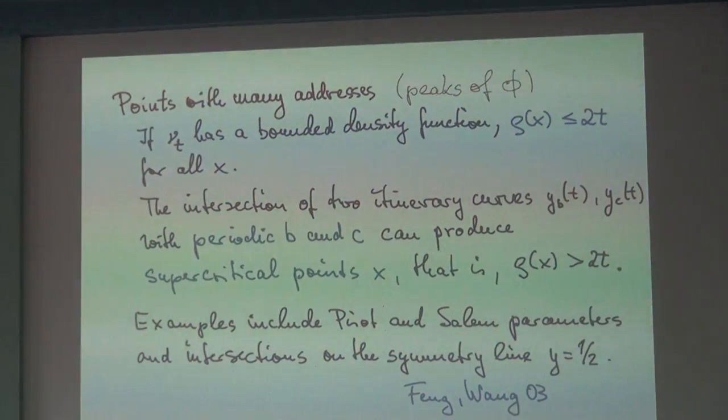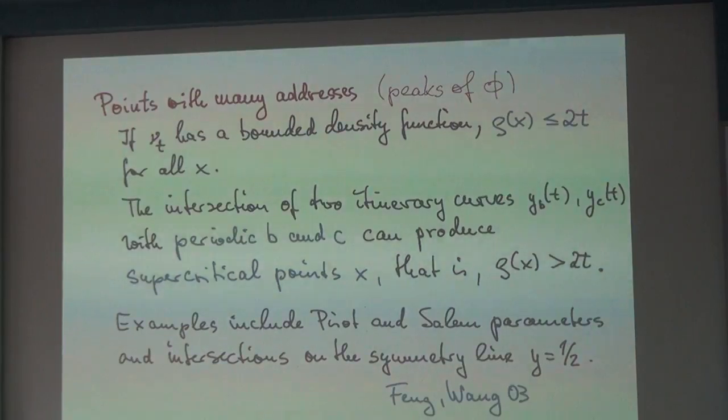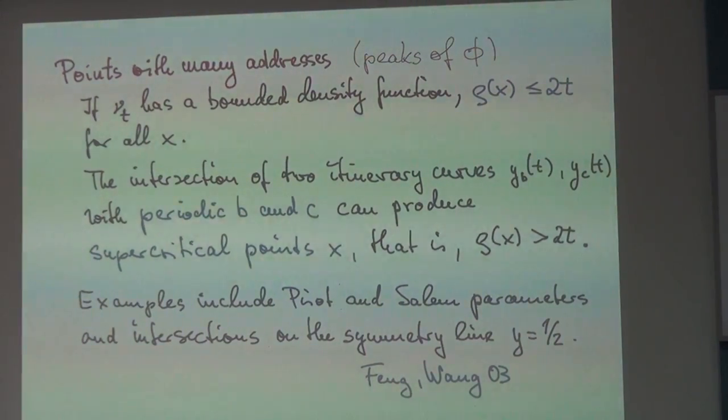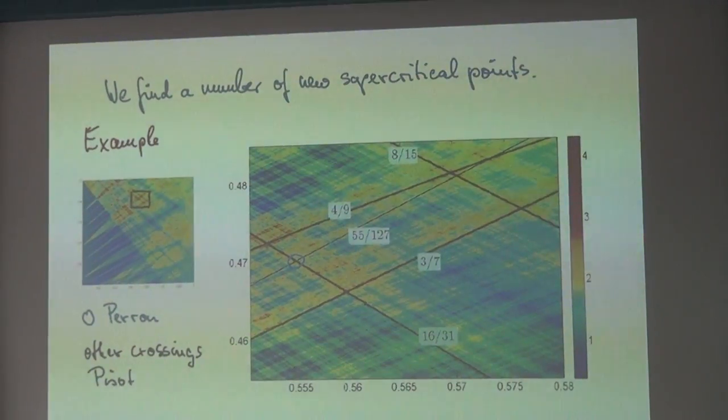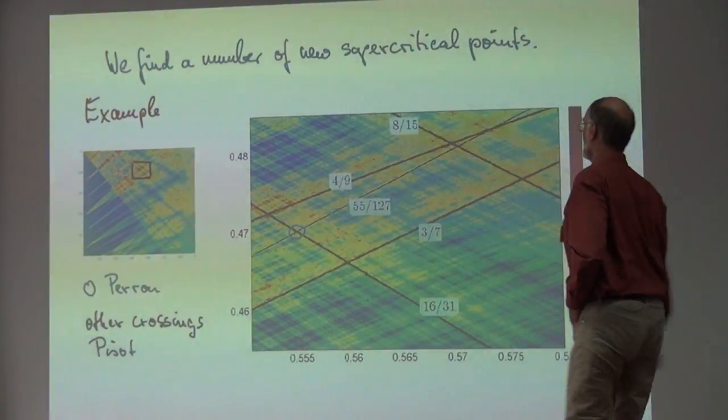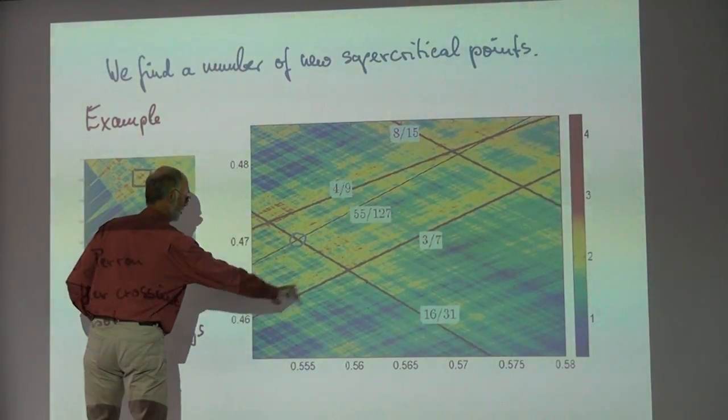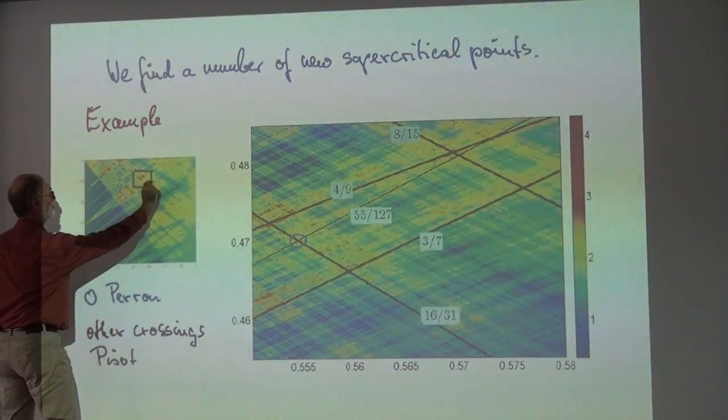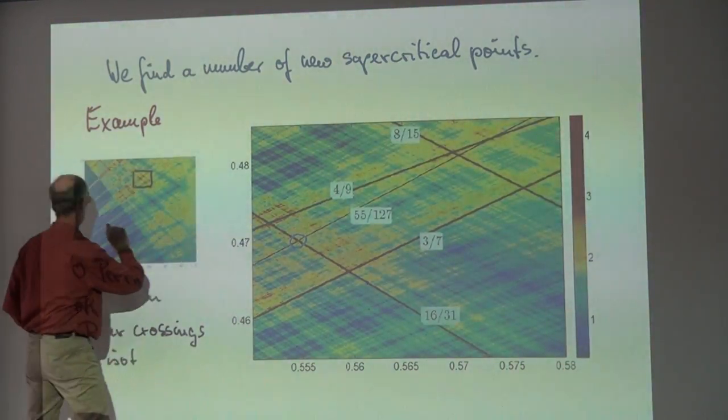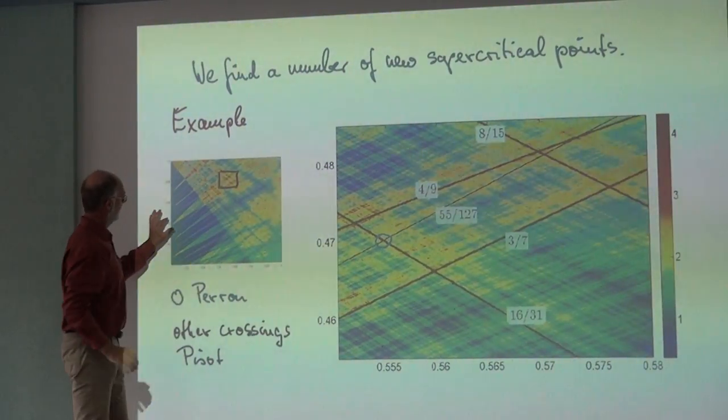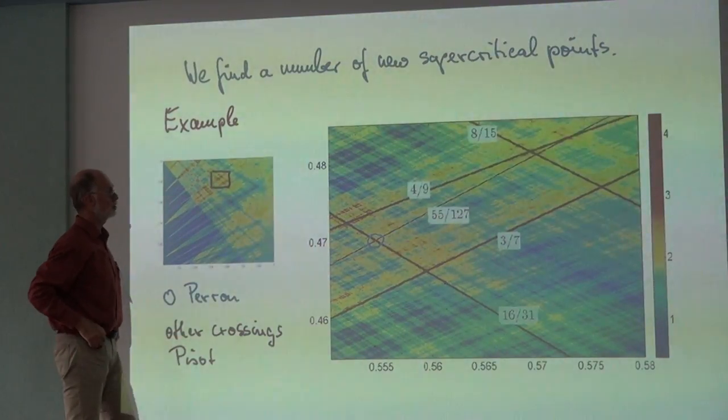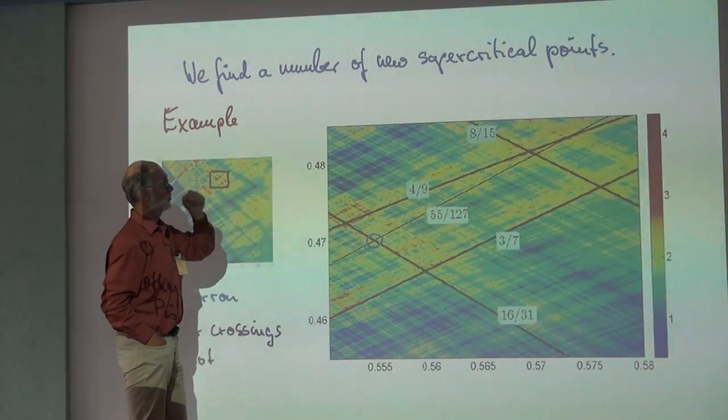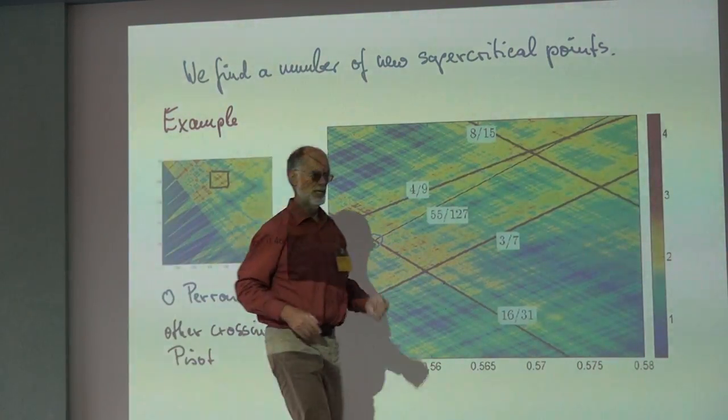So and then we have points with many addresses and these points come from periodic rational functions where periodic rational functions meet and there we can find some new things. For instance here, here we have some address functions. I extend 3 over 7 which 3 over 7 goes here and it comes in here and 4 over 9 is on the other side goes there. So these are the two blue lines extended into this region. And from the other side we consider some other rational functions which correspond to 8 over 15 and 16 over 31.